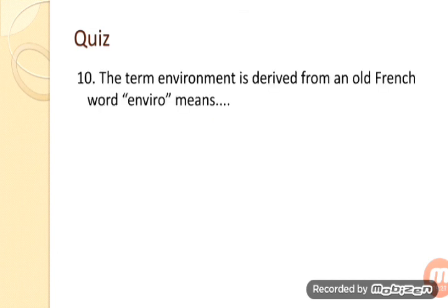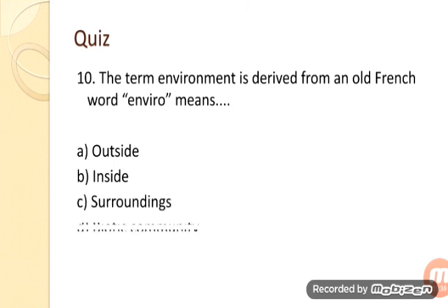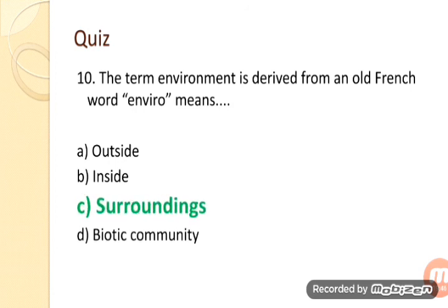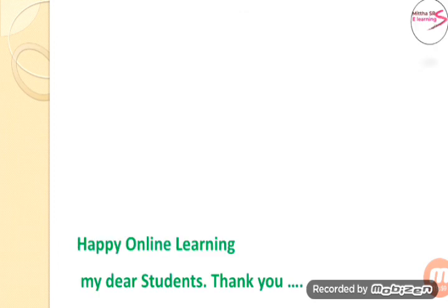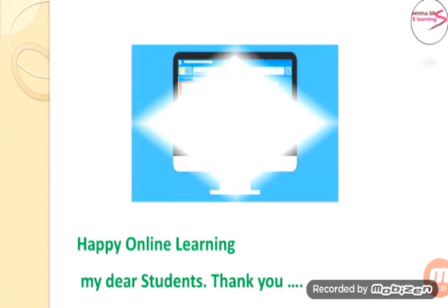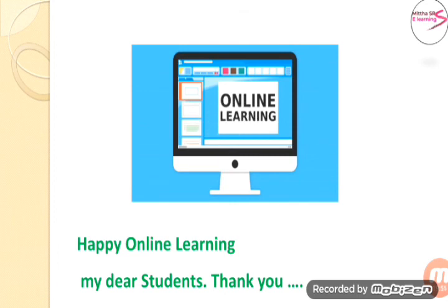Question 10: The term environment is derived from an old French word. 'Enviro' means? Option A: Outside. Option B: Inside. Option C: Surroundings. Option D: Biotic community. The correct answer is option C — Surroundings. Happy online learning, dear students. Thank you for watching this lecture.